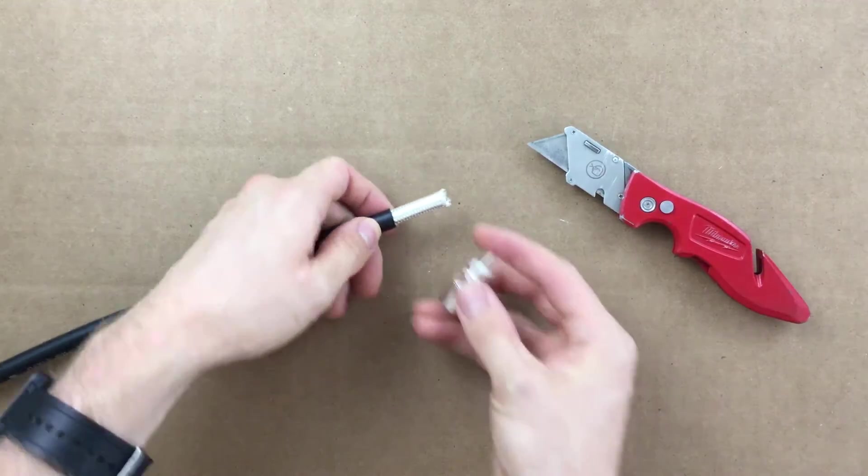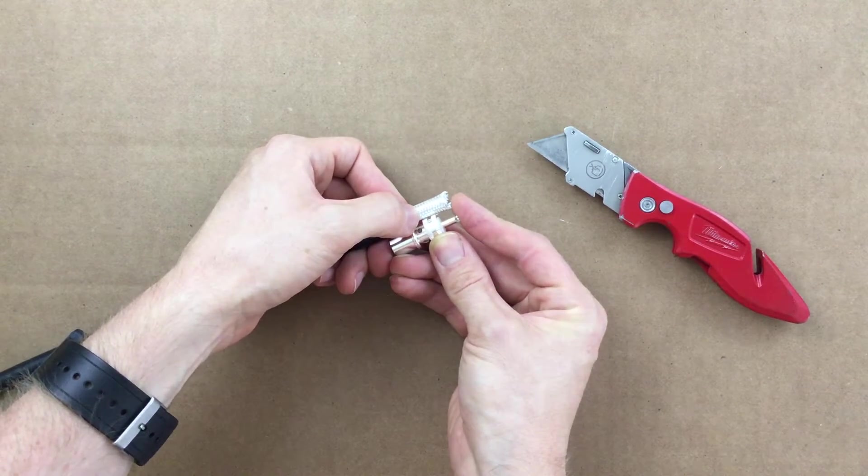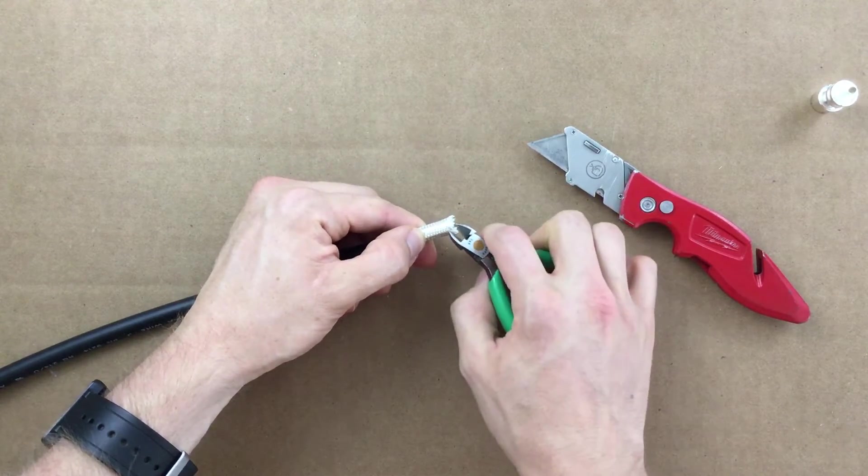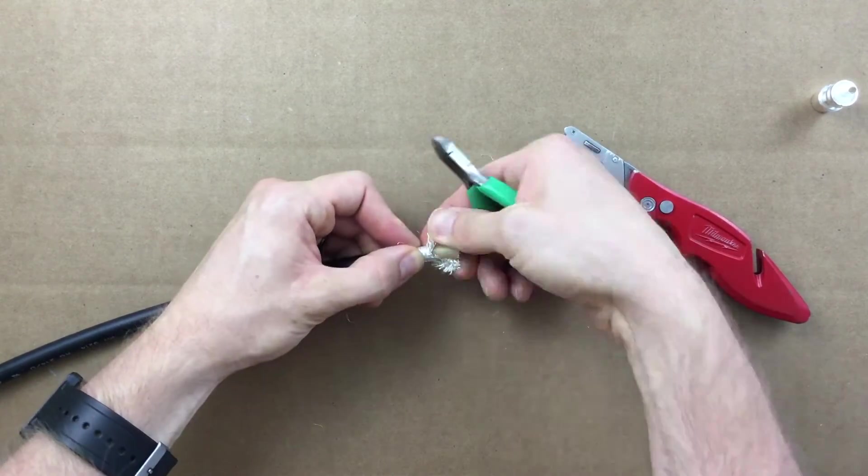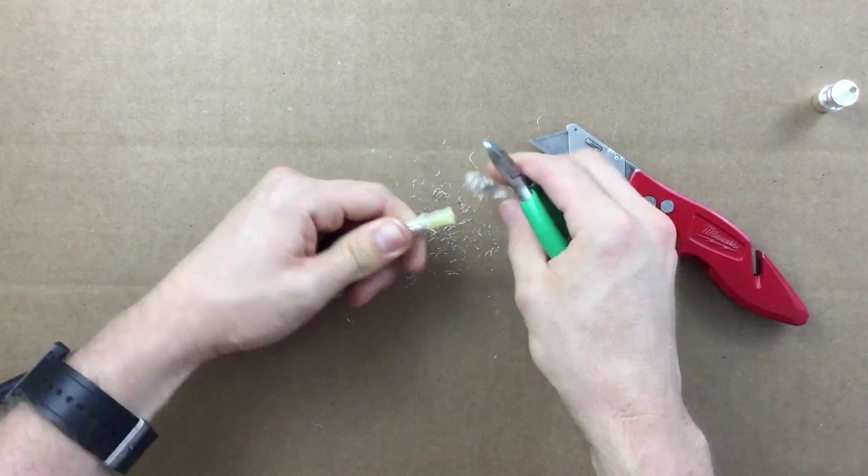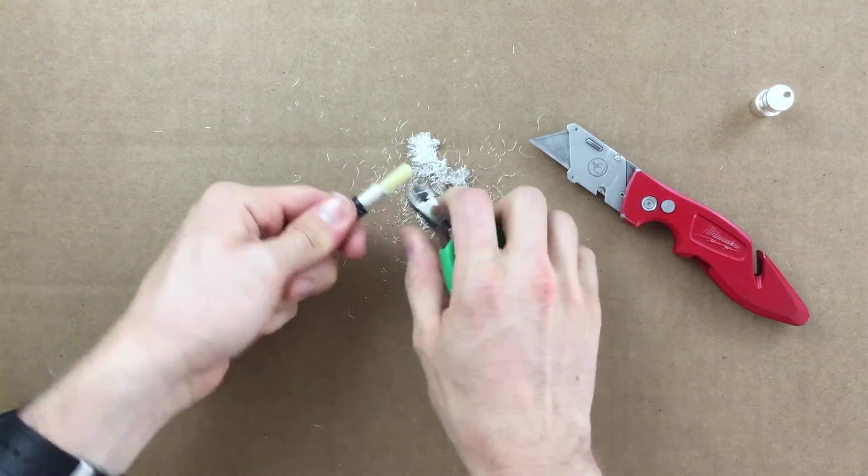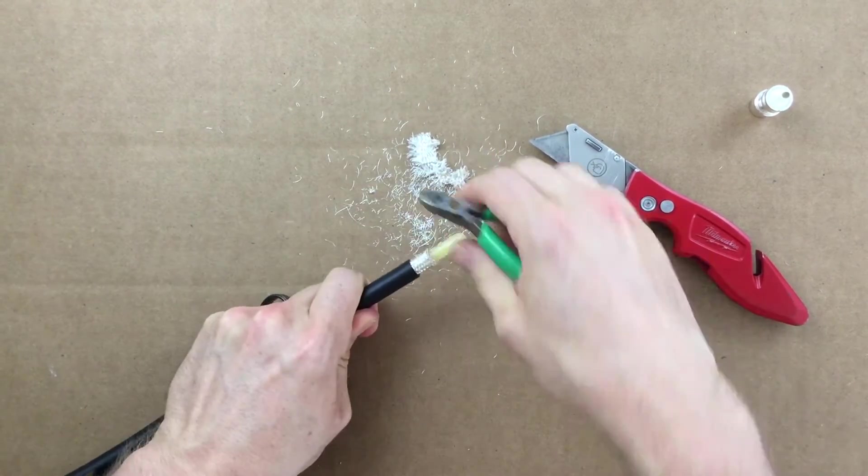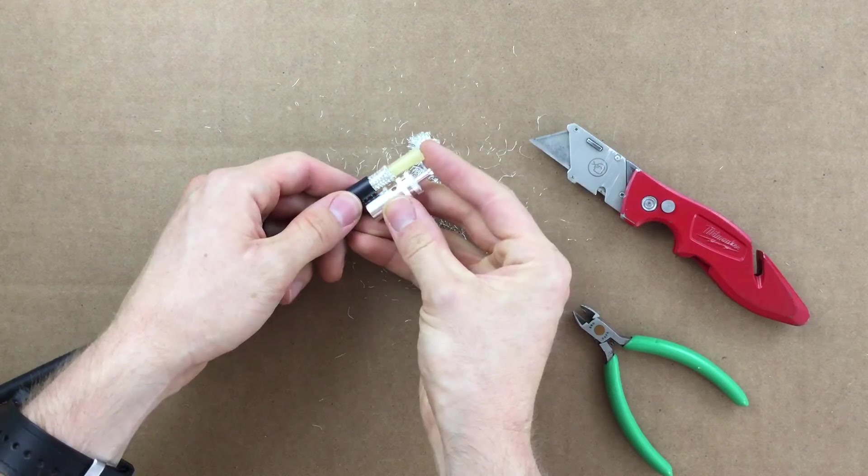Grab the main PL259 body again and line up the center pin with the end of the coax. Cut the braid back three quarters of an inch from the end of the coax, then line up the center pin with the end of the coax again.